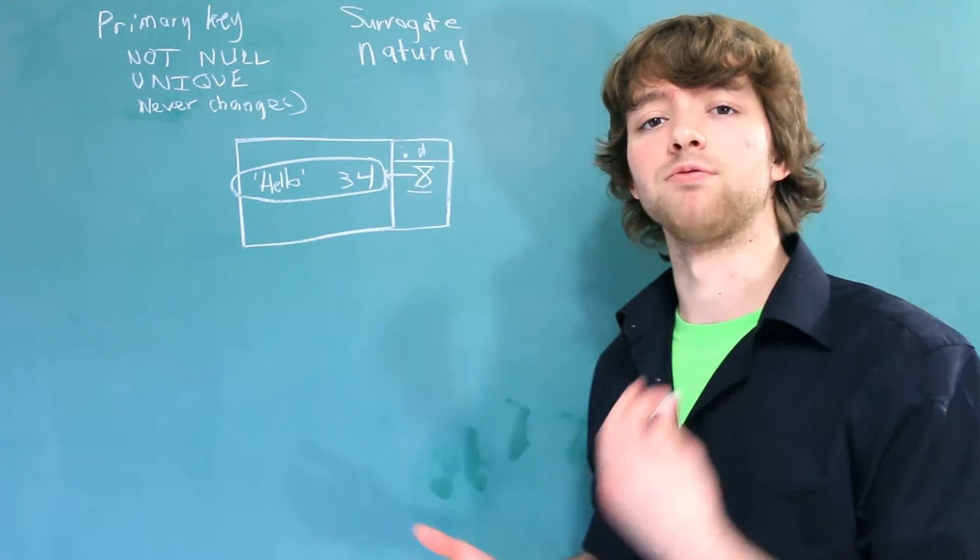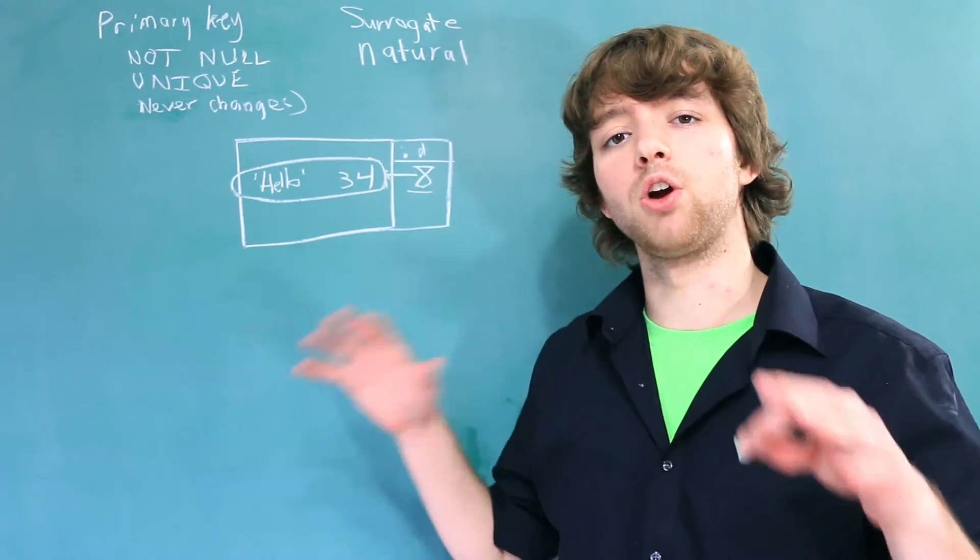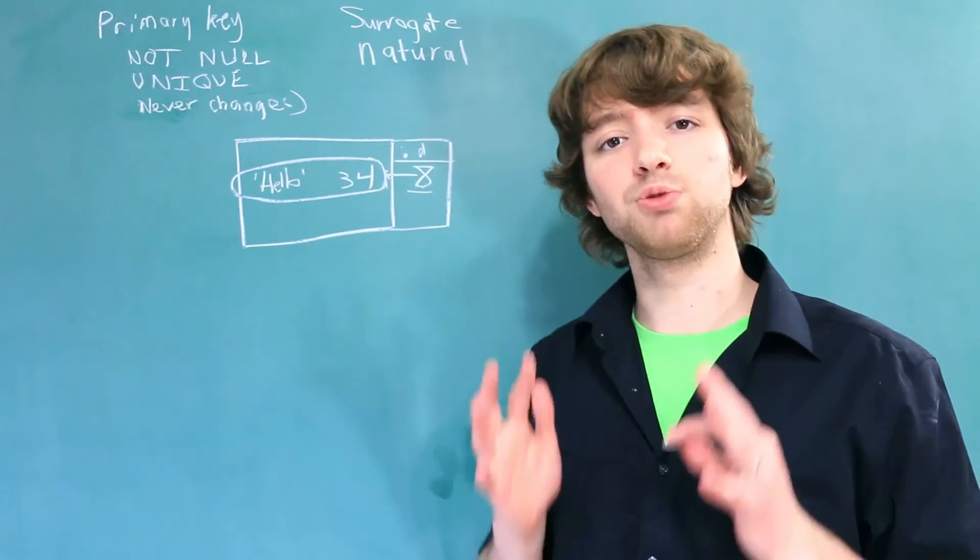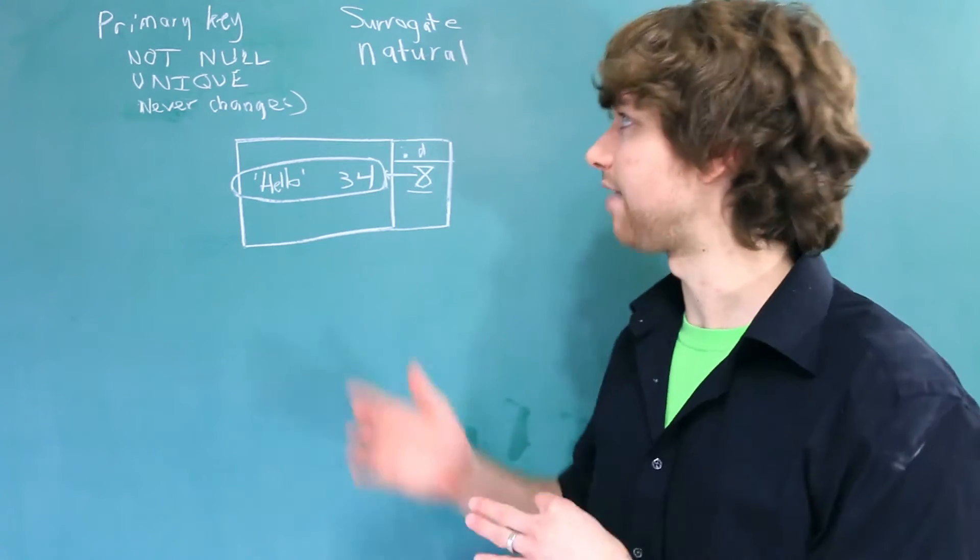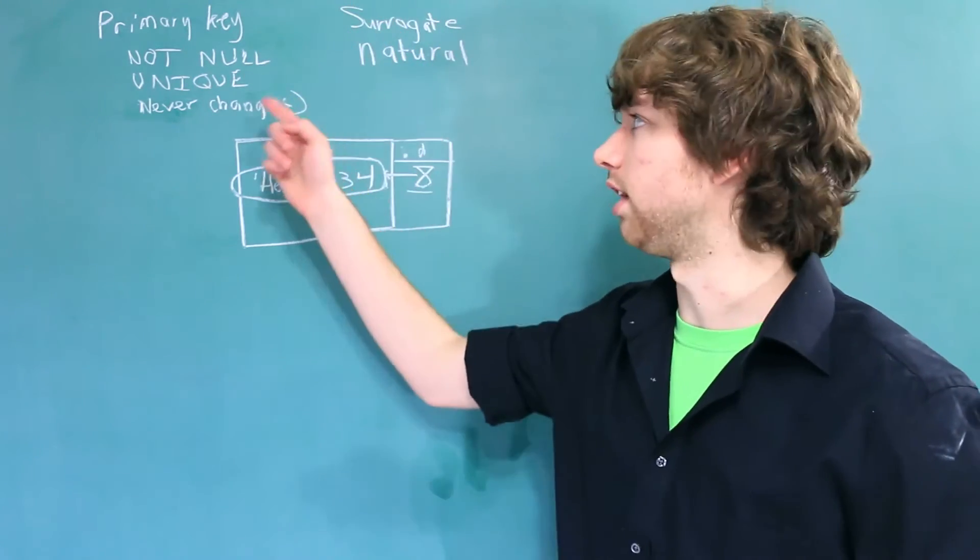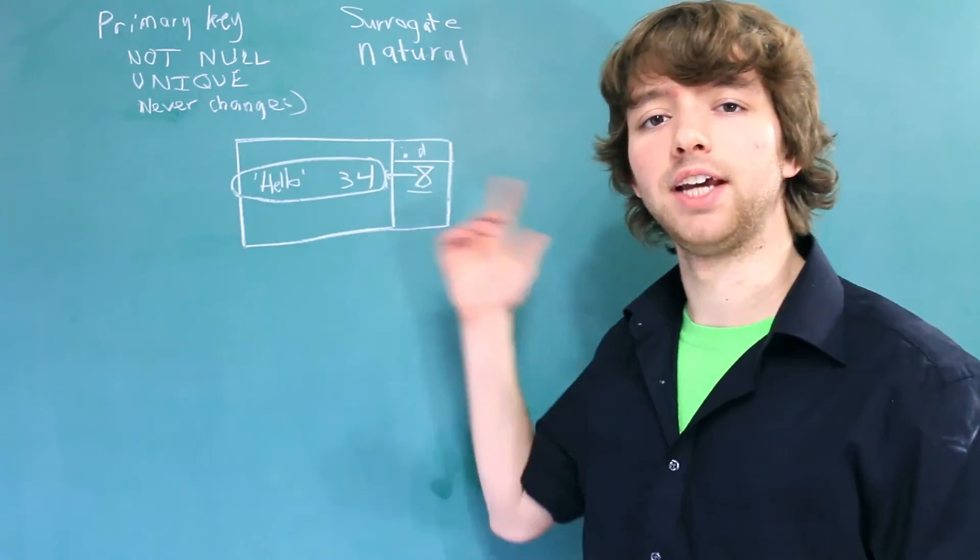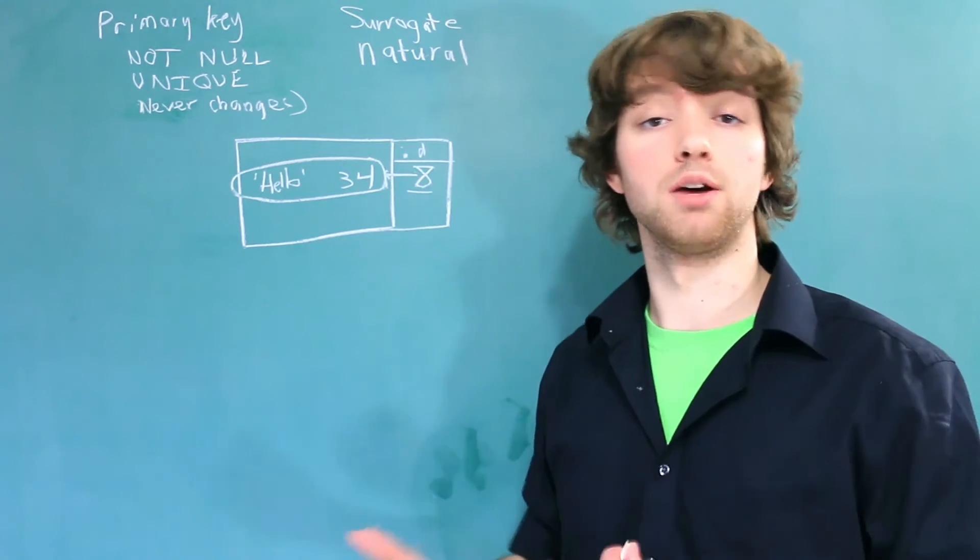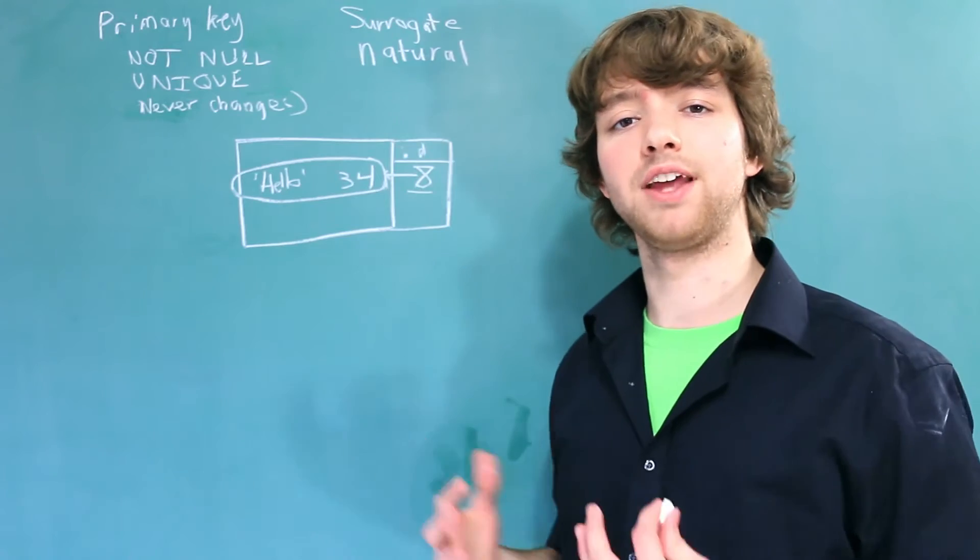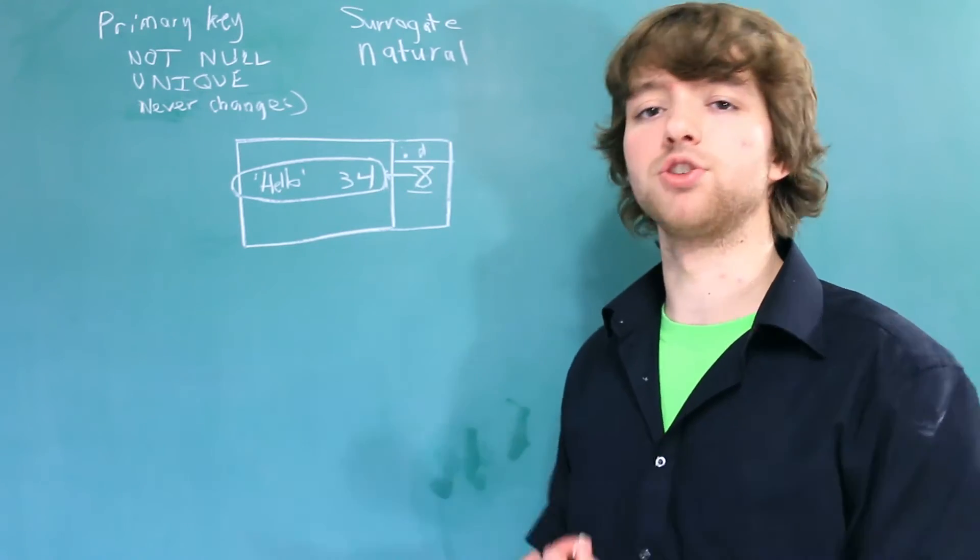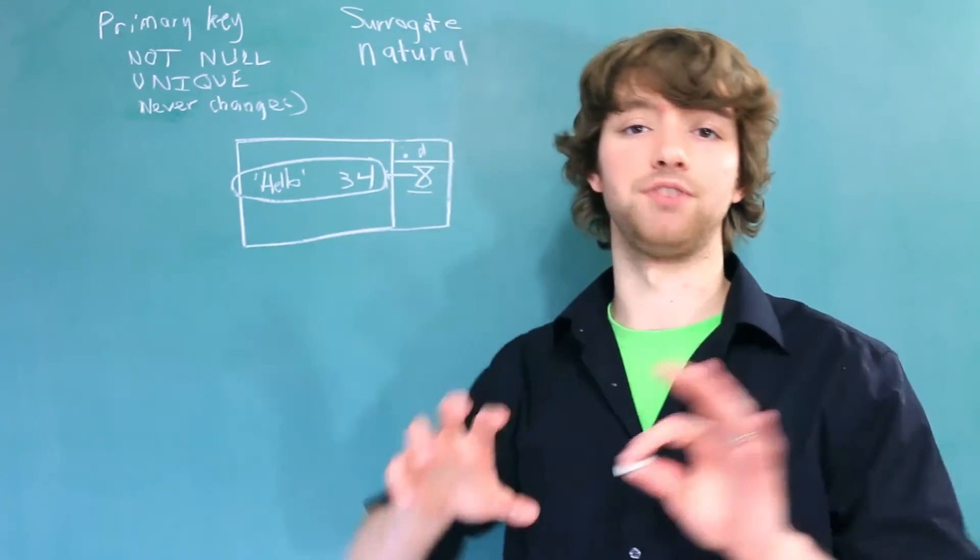Natural keys, on the other hand, have real-world meaning. They are a column that stores actual useful information, and these columns have to as well be not null, unique, and never changing. Because of that, natural keys are usually a bit harder to come up with. It takes a little bit more thinking, but as a result, you'll often have data that's easier to read because you don't have all of these IDs everywhere you have to connect.